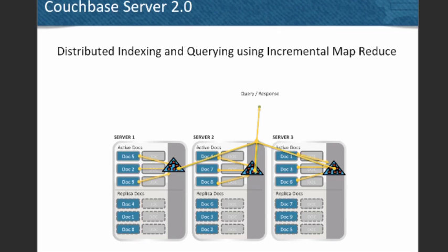You've been hearing a lot about Couchbase Server 2.0 throughout the day. One of the big things compared to 1.8 is going from a key-value store into a full-fledged document database. That means having distributed indexing and querying using incremental MapReduce. That adds a lot of features to your application and gives you a new way to access your data that you didn't have before.